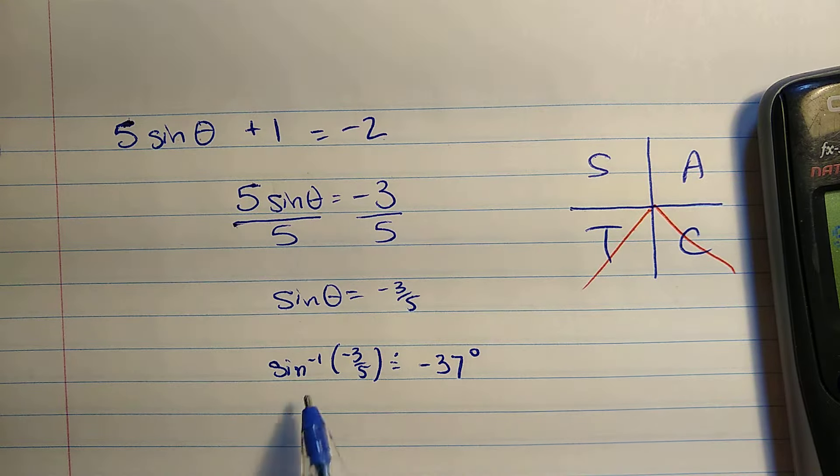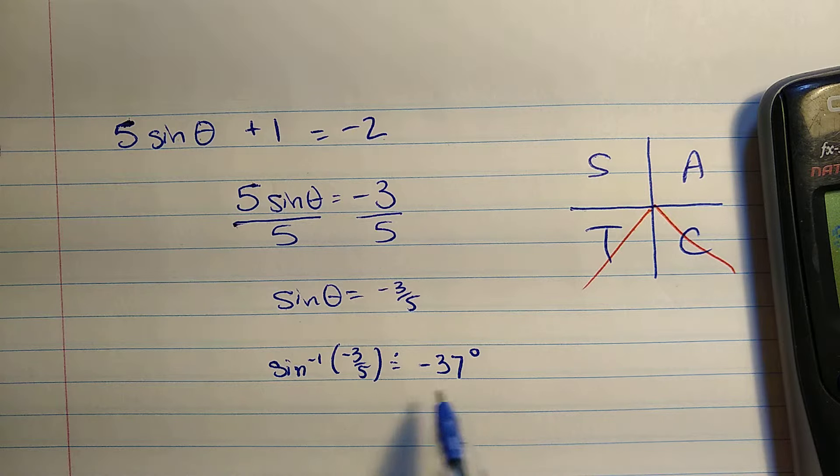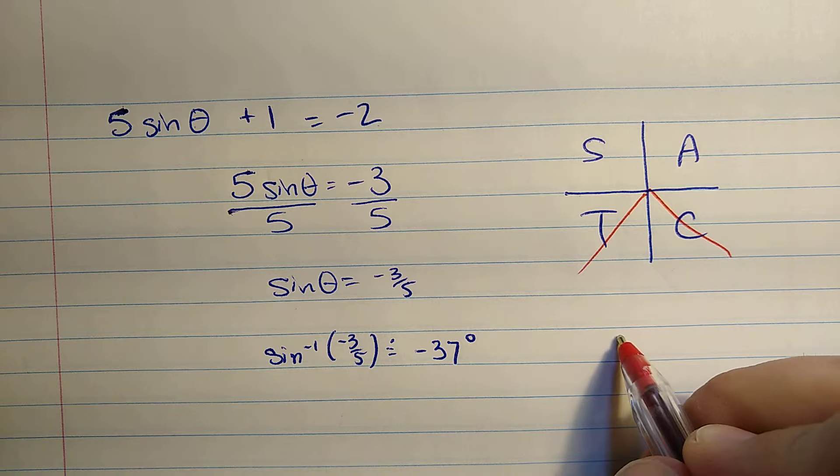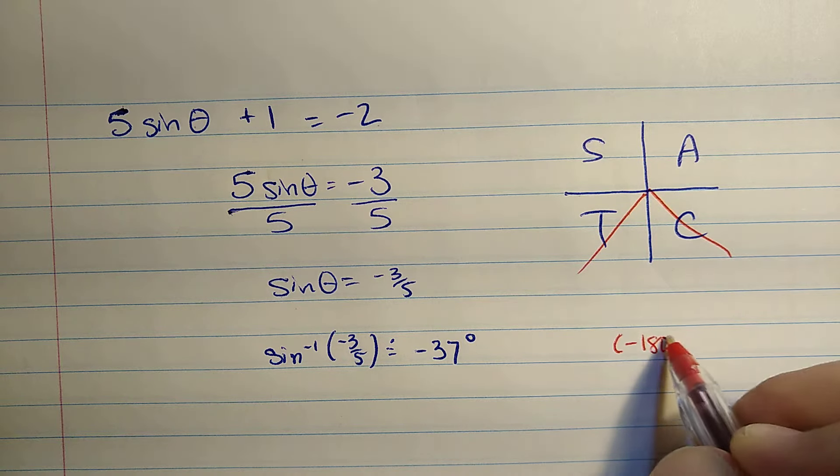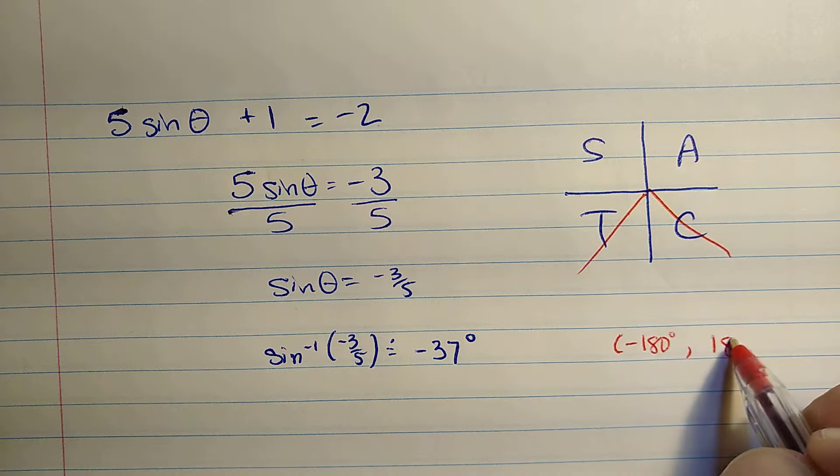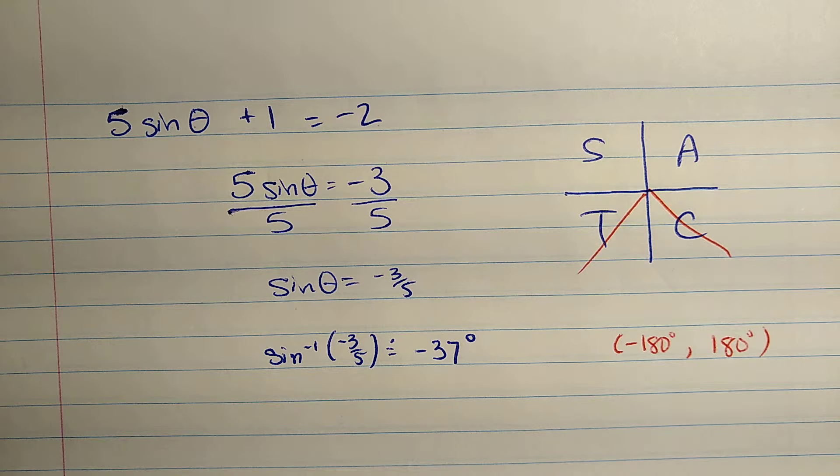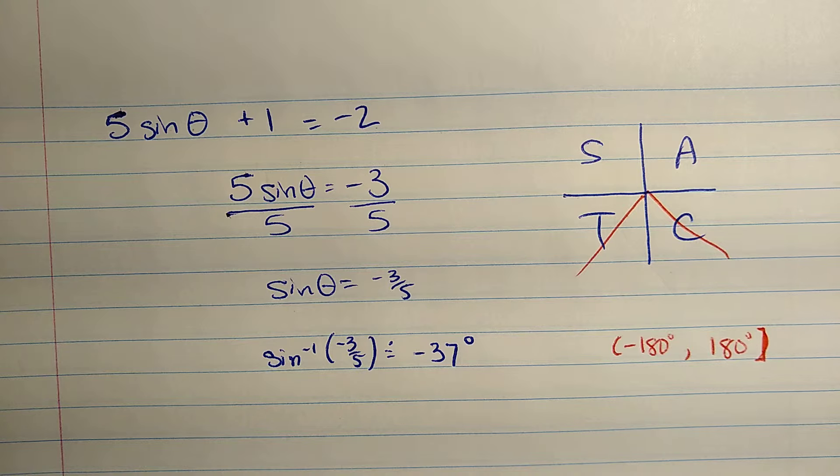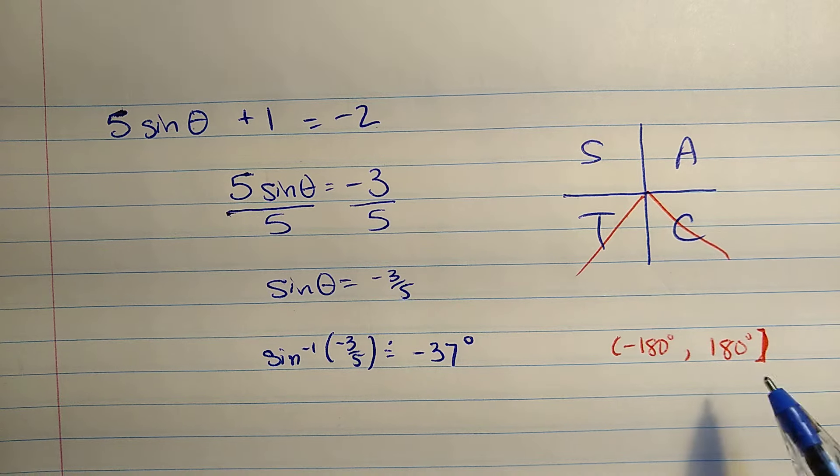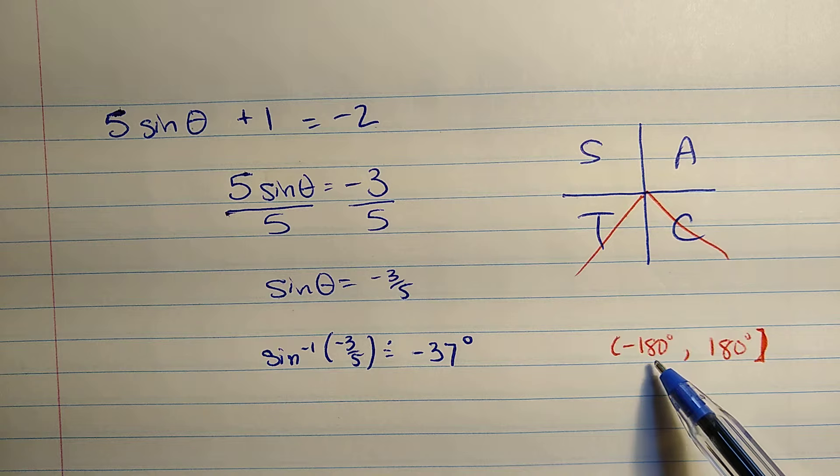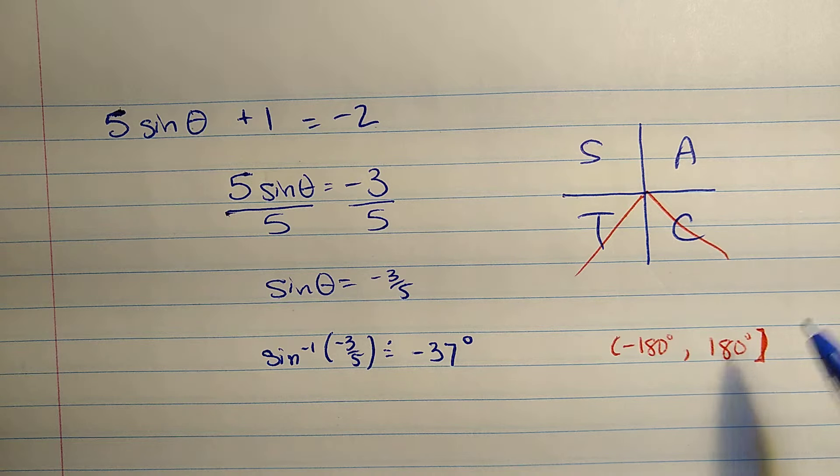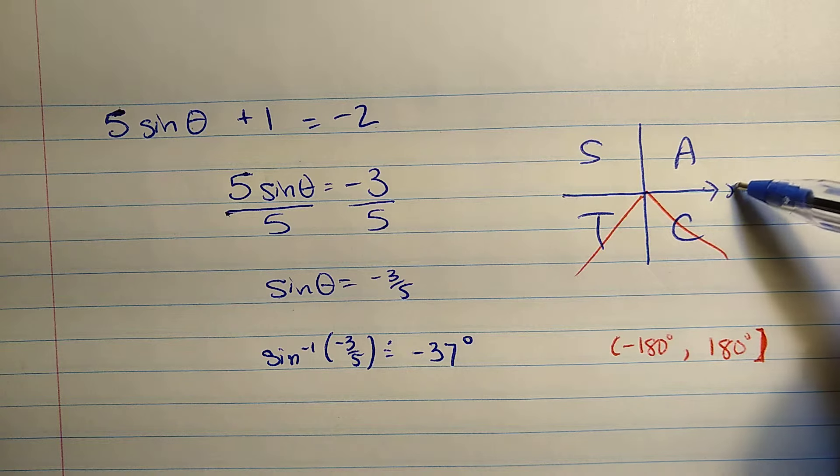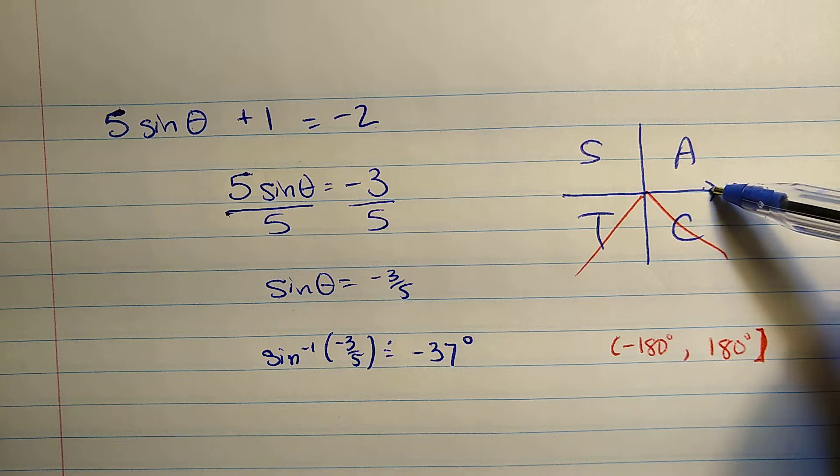Now, here's the thing about the inverse functions on your calculator. They give you angles that are between negative 180 and positive 180. Those are the angles that they give. Maybe they give exactly 180. I can't remember now. They don't give you angles like 200 degrees. They only give you angles between negative 180 and positive 180.